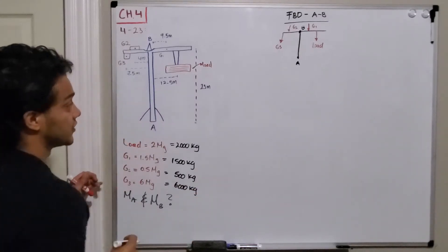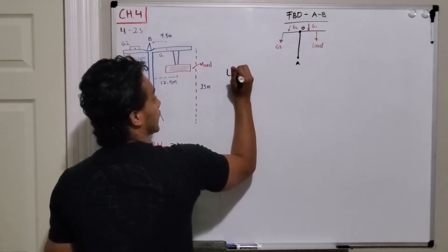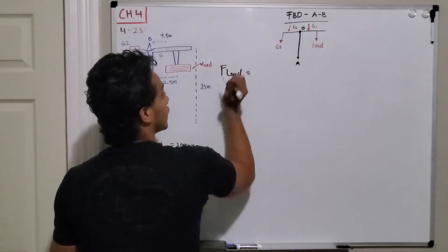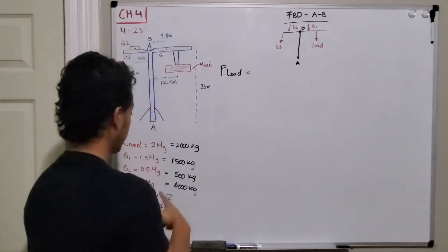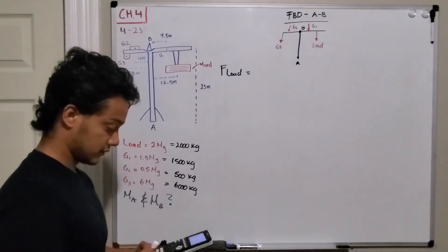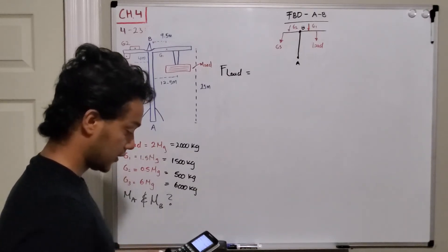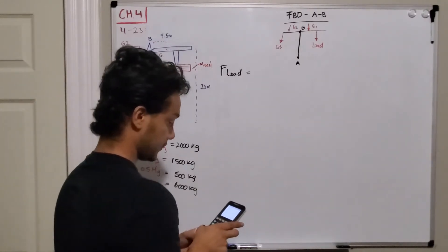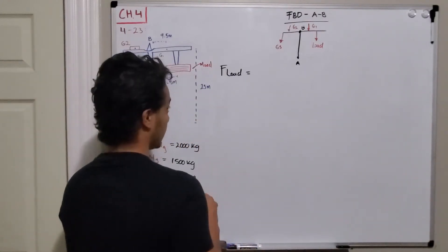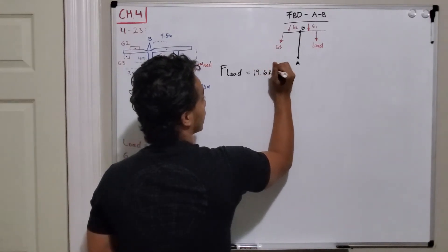Now we can find the forces in Newtons. The force of the load is its mass, 2,000 kilograms, multiplied by 9.81, which equals 19.6 kilonewtons.